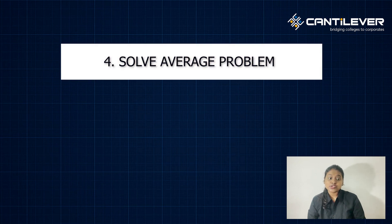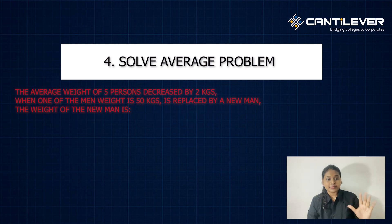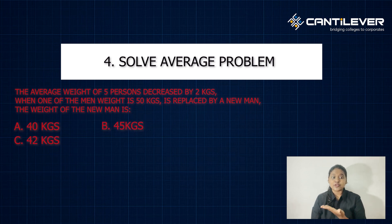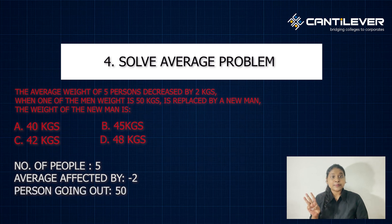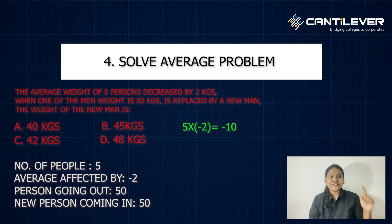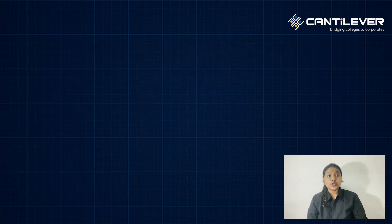Going forward, we have a technique to solve the average problem. The average weight of 5 people decreased by 2 kg when one man weighing 50 kg is replaced by a new man. What is the weight of the new man? Options: 40 kg, 45 kg, 42 kg, 48 kg. Calculate four factors: number of people is 5; average affected by is minus 2; weight of person going out is 50. Multiply 5 × (−2) = −10. Subtract −10 from 50: 50 − 10 = 40 kg. That is the weight of the new person.